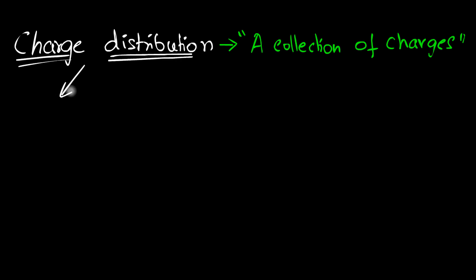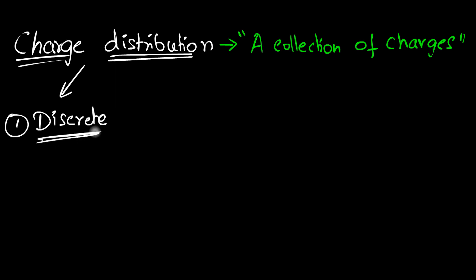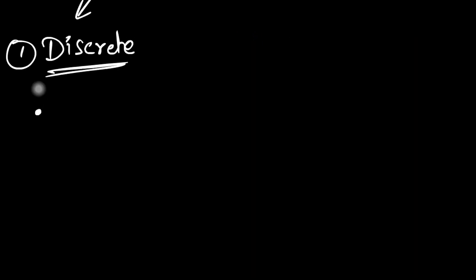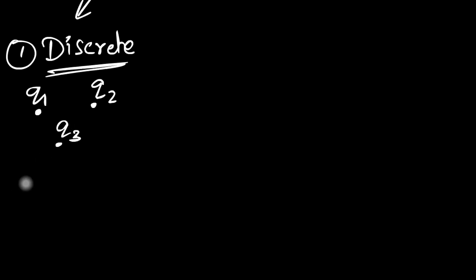One kind is called a discrete distribution. A discrete distribution is where you can identify individual charges. For example, there is charge q1 over here, there's charge q2 over there, and there's a charge q3 here. So we can think of clusters of charge — we can identify those charges.